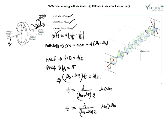If θ equals 45°, the half wave plate rotates the azimuth of the plane polarized light by 90°. Such a plate is used in polarimeters and half-shade devices to divide the field of view into two halves presented side by side. So the half wave plate converts incident plane polarized light into emergent plane polarized light, rotated by 90°, as clearly shown in this diagram where theta is 45°.